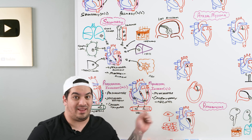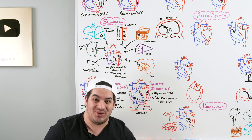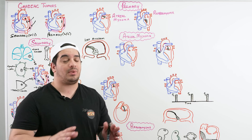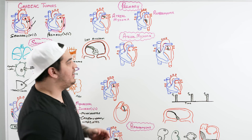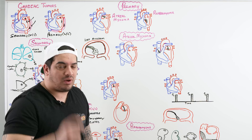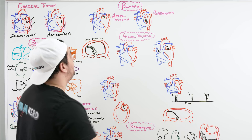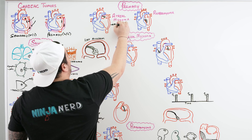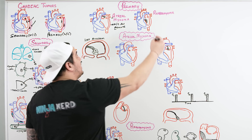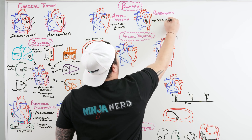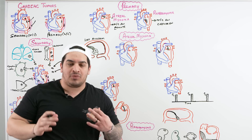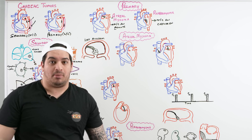Now let's talk about primary cardiac tumors: myxoma and rhabdomyoma. These are relatively rare and form from the actual cardiac tissue itself. An important epidemiological fact: atrial myxoma is more common in adults — think 'A for adults, A for atrial myxoma.' Rhabdomyoma is more common in children. The more common one of the two is atrial myxoma.